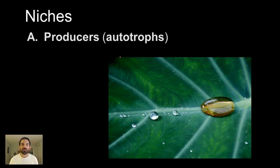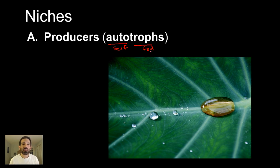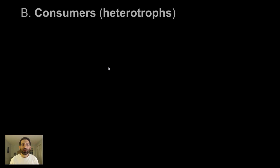Let's go over some important niches found in most ecosystems. The first, because it's the base of every food chain, is the plants or the producers. They are producing their own food — they're also known as autotrophs. Auto means self and troph means fed, so they feed themselves through photosynthesis. The opposite would be the consumers — they eat to survive. They're also known as heterotrophs. Hetero means other and troph means fed, so they are fed by others.